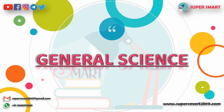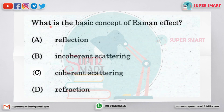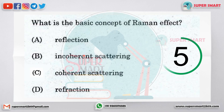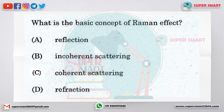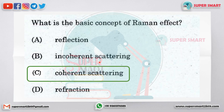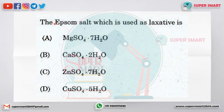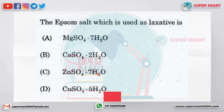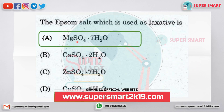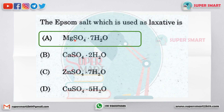First one, general science question. First question: what is the basic concept of Raman effect? The answer is coherent scattering. Next question: the Epsom salt which is used as a laxative is dash. The answer is MgSO4·7H2O.